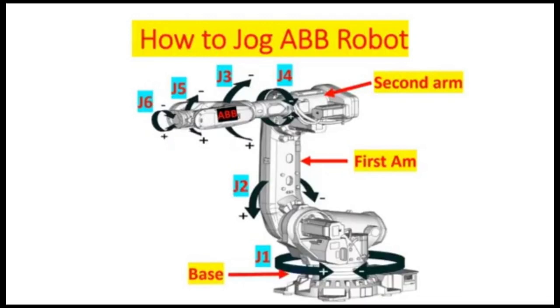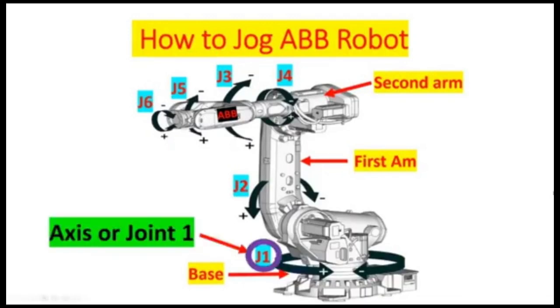Next, I'm going to show you the witness mark of every axis of the robot. But first, I'm going to familiarize you with the main components of the robot. This is the base, this is the first arm, and this is the second arm.